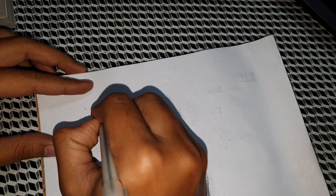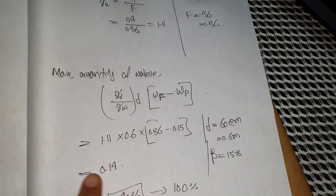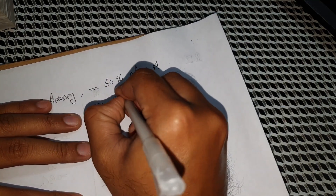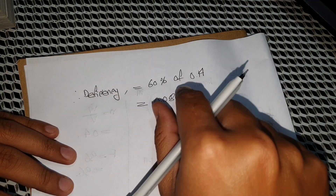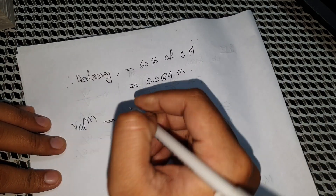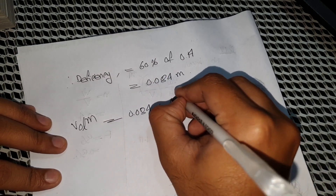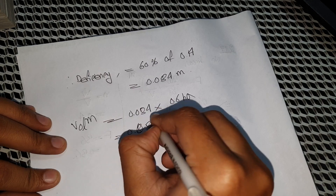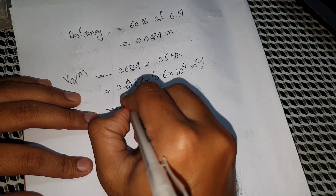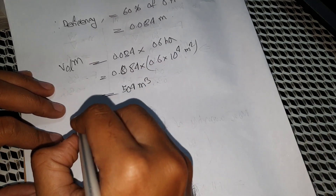The key deficiency is 60% of the maximum quantity of water stored, giving 0.14 meter. The total area multiplied by the volume: total volume is 0.084 into 0.6 hectare, which equals 0.084 into 10,000 square meters, giving a total volume of 0.504 meter cube. And we have 800 meter cube applied to the field.